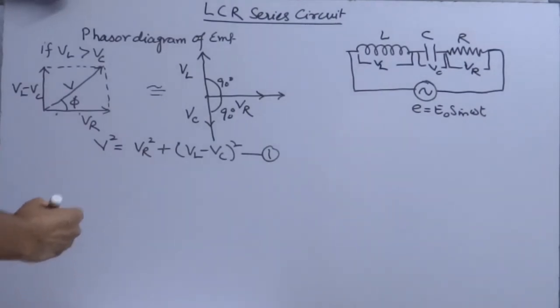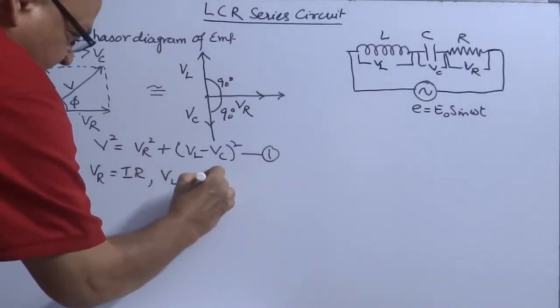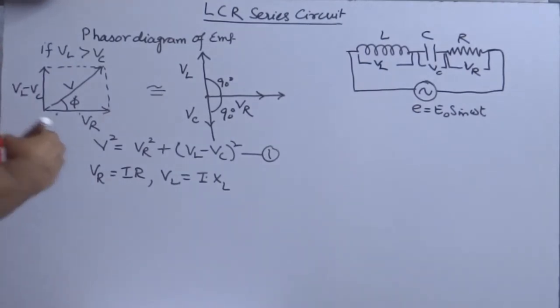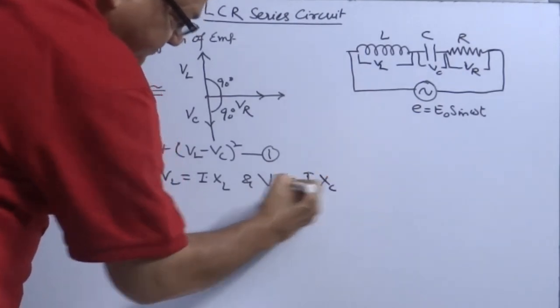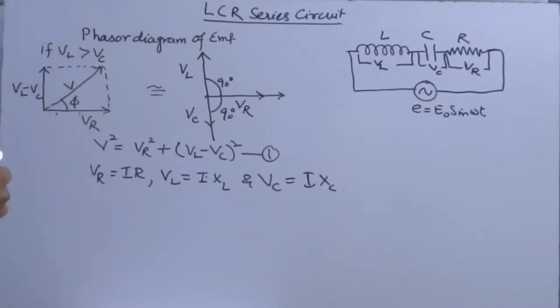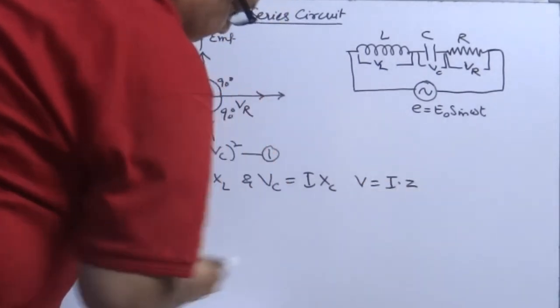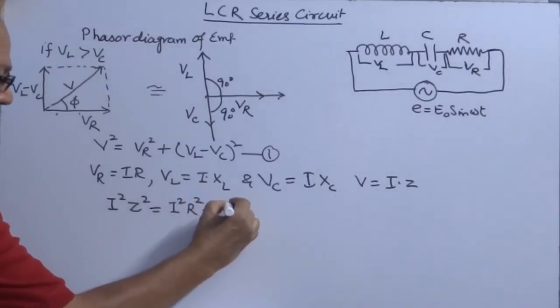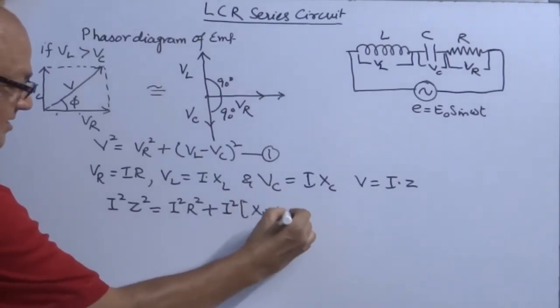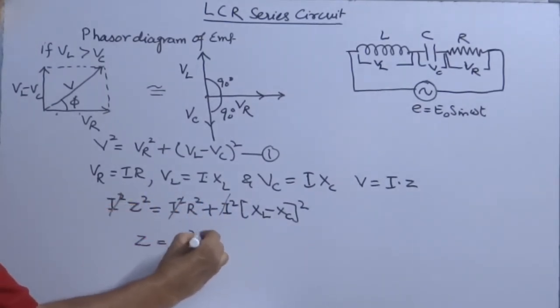But if I say VR I can write it as I into R, VL I can write it as I into XL where XL is the resistance offered by an inductor, and VC I can write it as I into XC. So let's put these values in equation number one. I will find I square, I can take out common: Z is equal to square root of R square plus XL minus XC whole square.